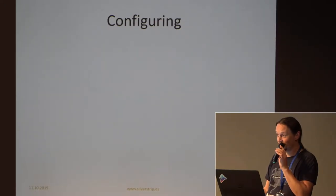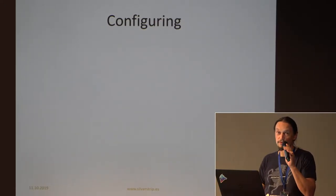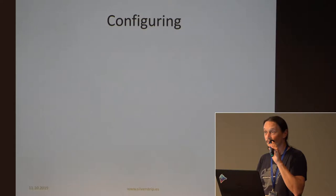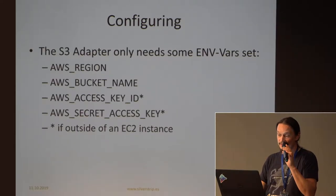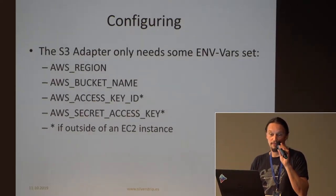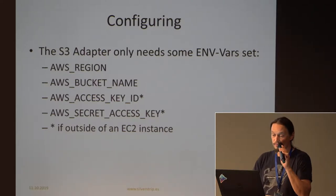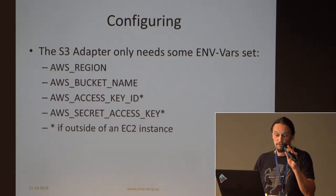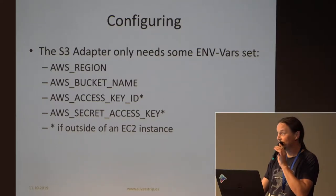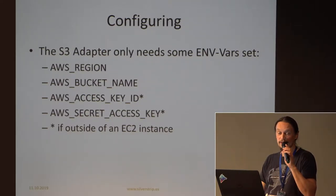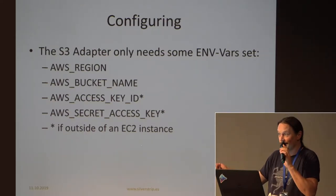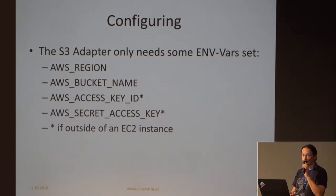Configuring it is pretty easy. The S3 module, for instance, comes with configuration out of the box. You just need to provide what's needed to get S3 working: the region, the bucket name, and if you're on your own server, the secret credentials. Just configure some environment variables and you're done — install the module via Composer, configure it, and you're done.